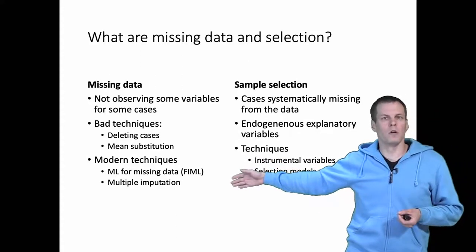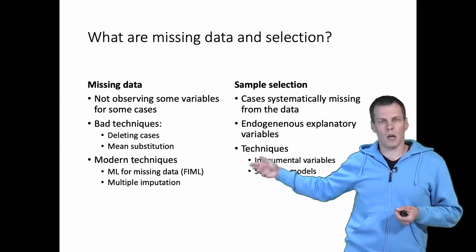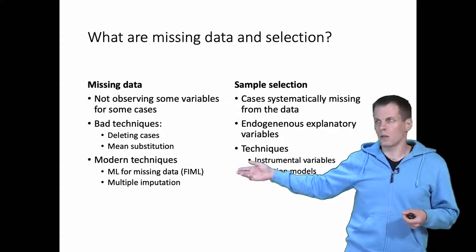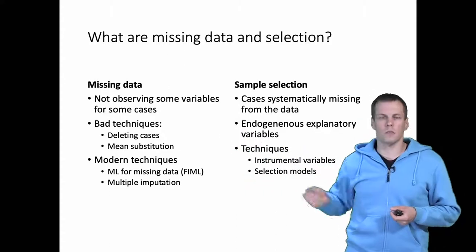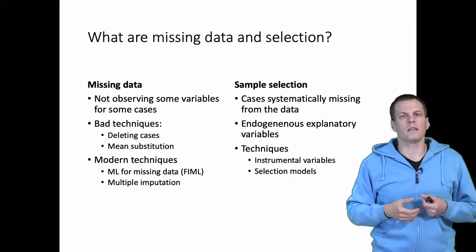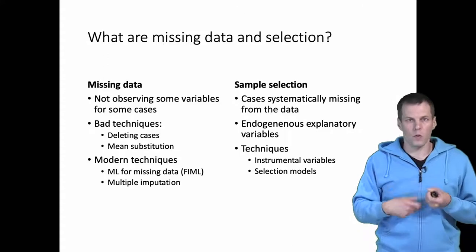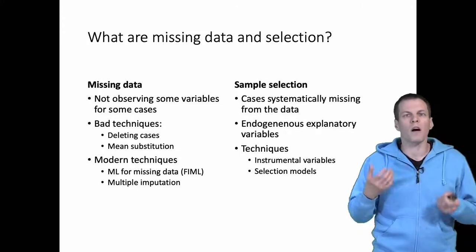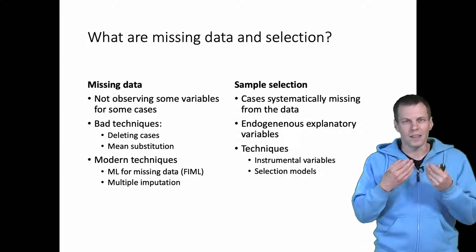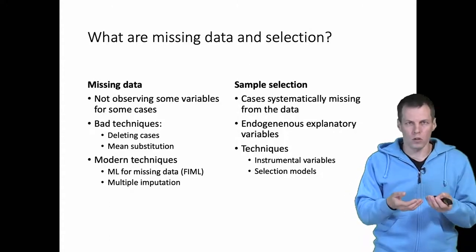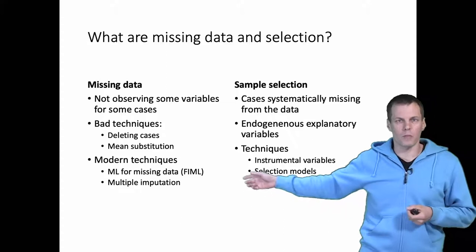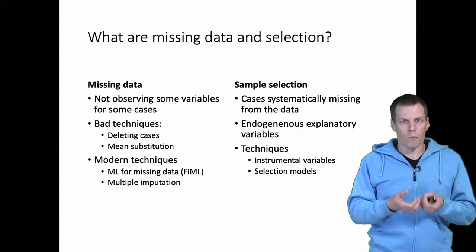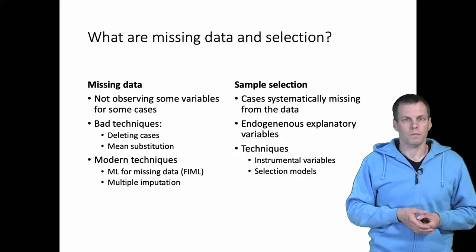Then we have multiple imputation, which basically comes up with guesses for the missing values in the same way that mean substitution does, but it is a lot more refined approach and it has been proven to work well. There are ways of guessing the data that does not cause bias. In fact, multiple imputation corrects for certain kinds of selection bias caused by missing data.